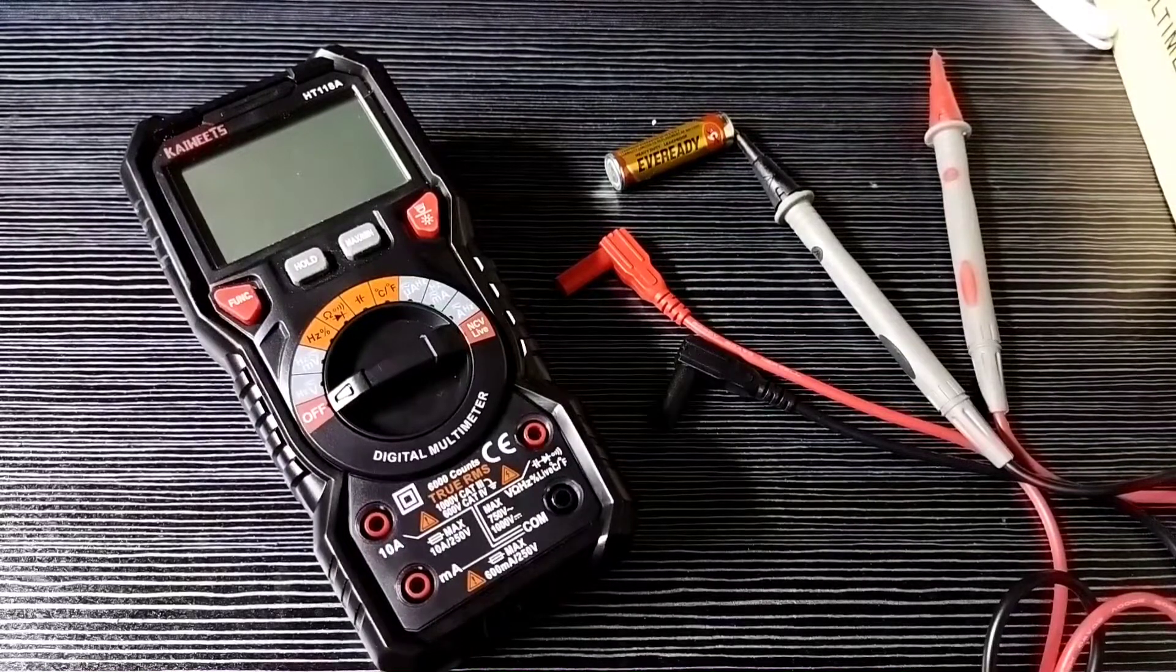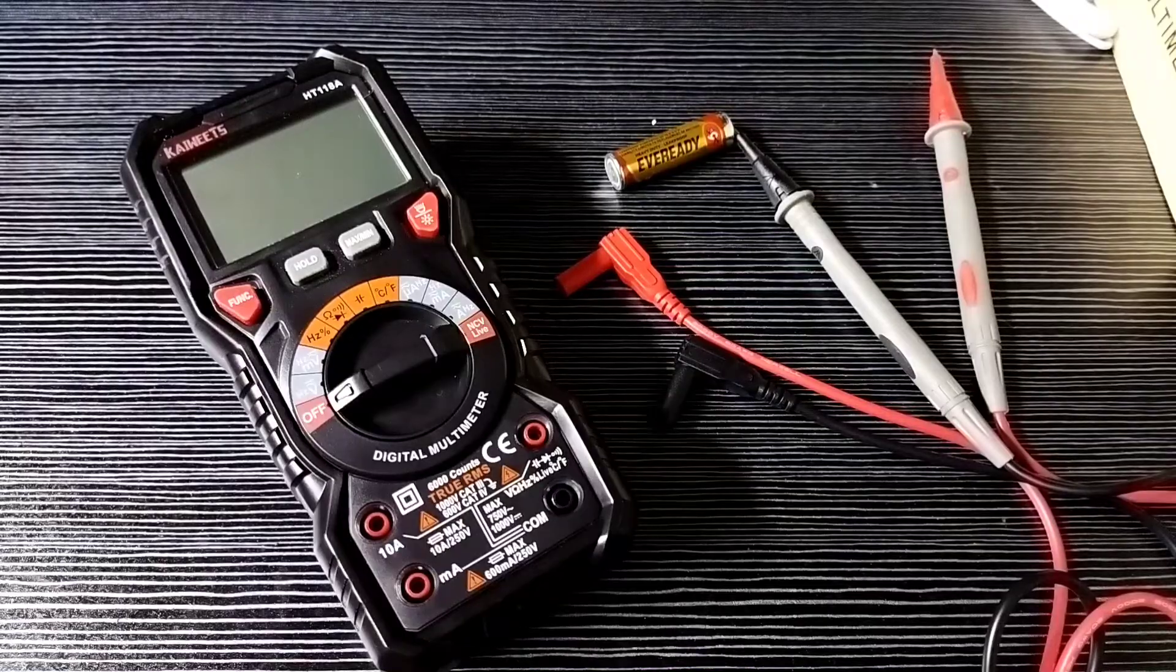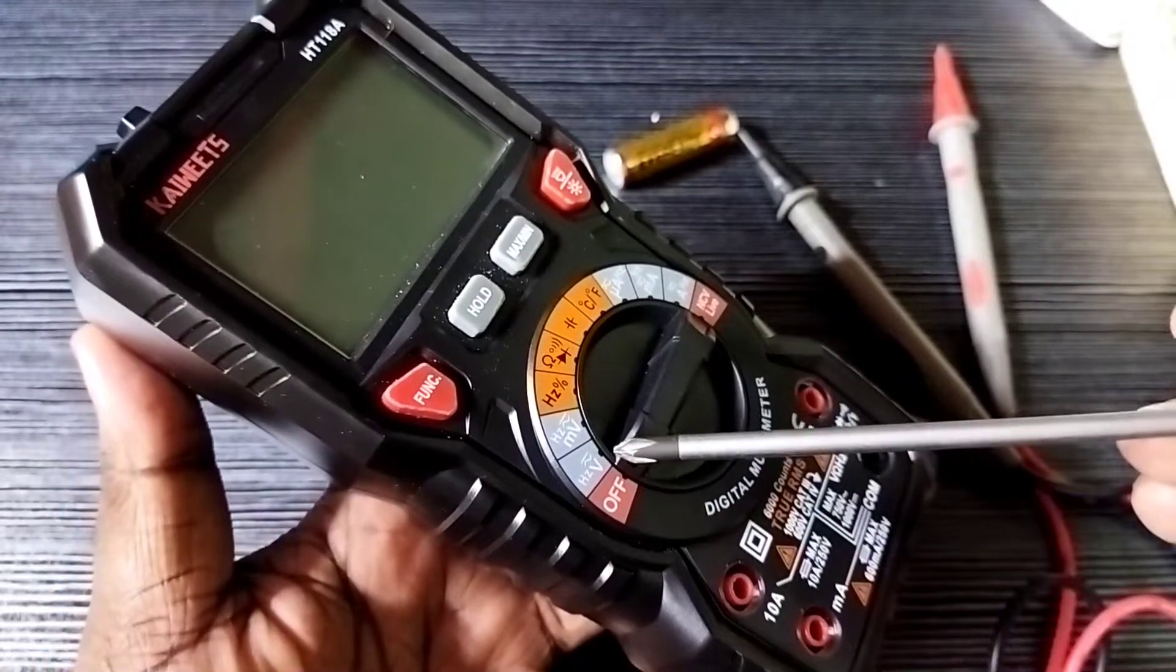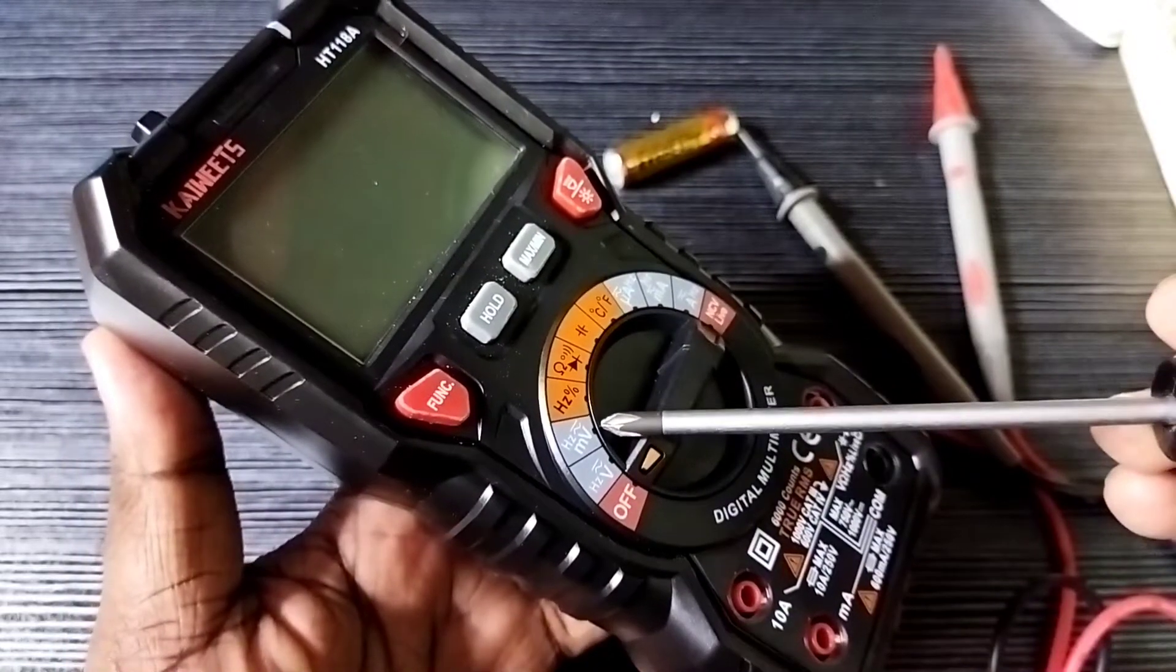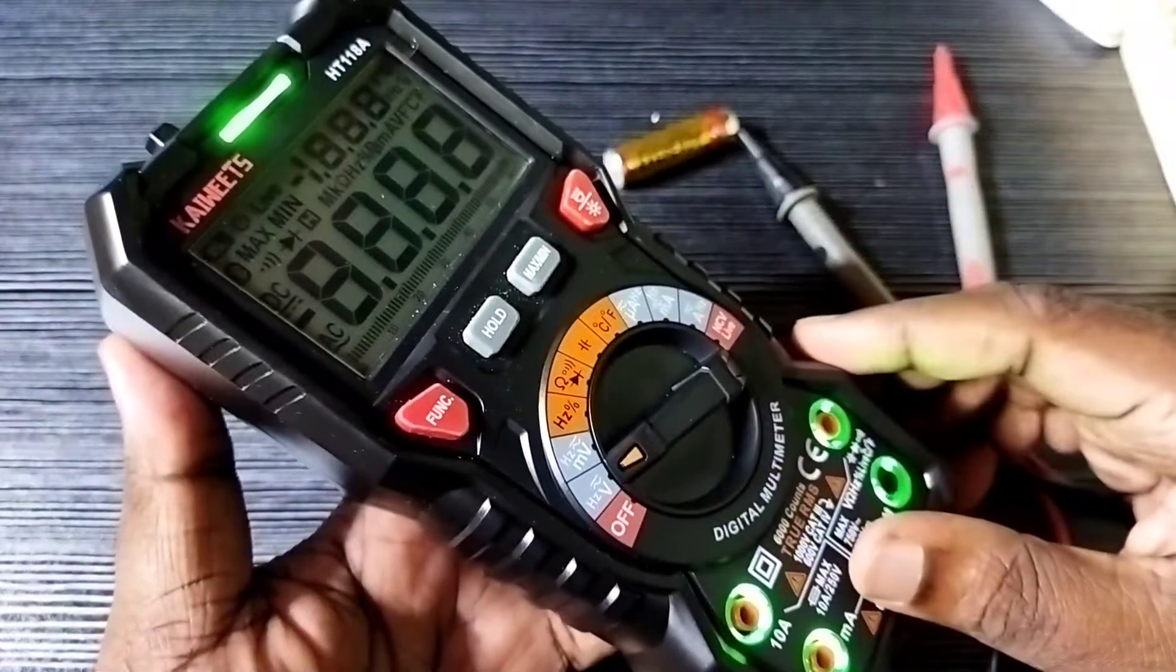Hi friends, this video shows how to check DC voltage or voltage of batteries using a Kaiwitz digital multimeter. First, we need to rotate the rotary switch and select voltage here.